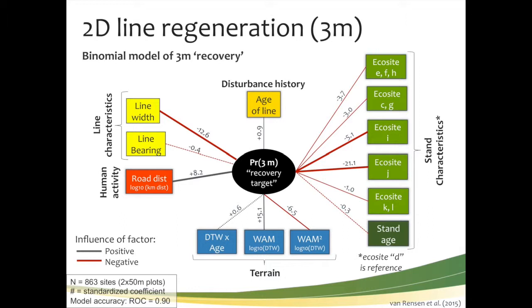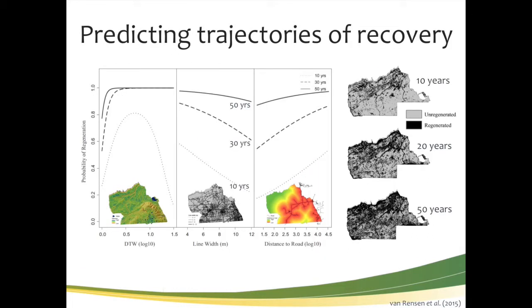These numbers represent standardized coefficients. One standard deviation change in road distance increases the likelihood of recovering to a 3-meter rule by 8.2 logit units. Graphically, we show three different lines representing 10, 30, and 50 years after disturbance, across different environmental gradients such as depth to water.